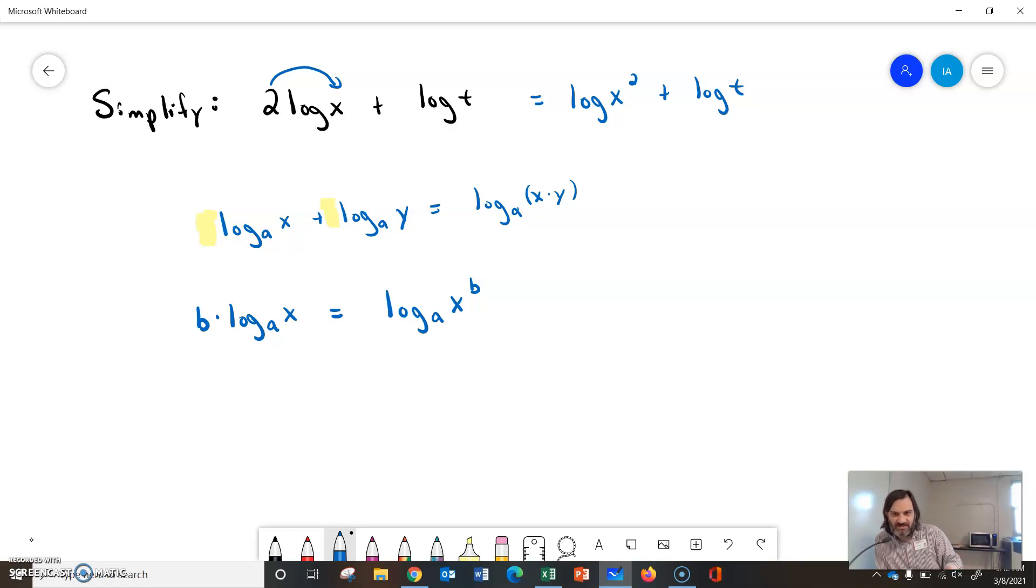So in combining this statement, we'll have log understood base 10 of x squared times t. So log of x squared t would be our final condensed version. Thank you.